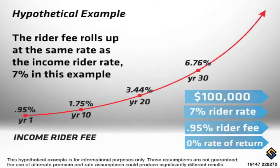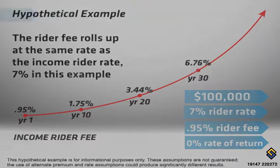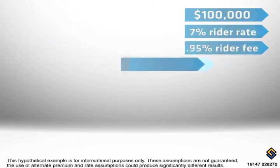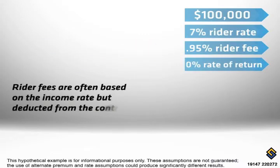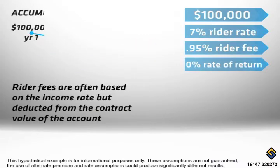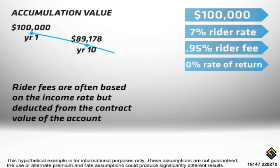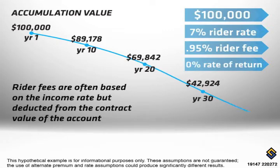The fee of 0.95% is calculated based on the increasing rider income account each year. This fee is then deducted from the accumulation value of the base contract. At a 0% return, we quickly see that the accumulation value is reduced to cover the cost of the fee.